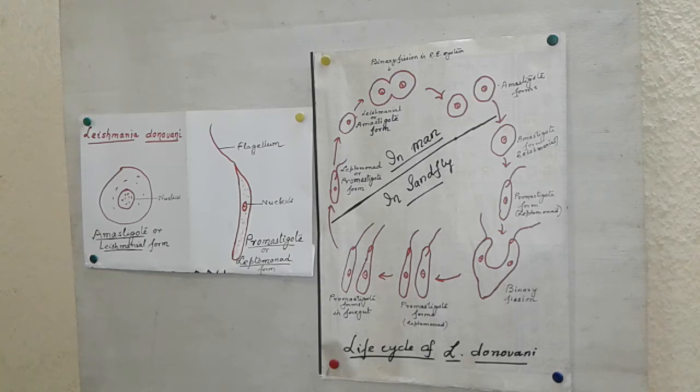So clinical features or symptoms. The disease is characterized by fever, anemia, enlargement of liver and spleen, and loss of body weight. The skin becomes dry, black and pigmented. Due to black color of the skin with fever, the disease is known as collagen, K-A-L-A hyphen A hyphen Z-A-R.